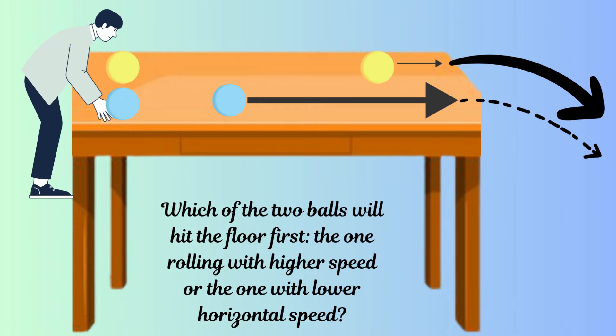Before we start analyzing projectile motion in detail, try this experiment: take two balls and place them gently on a smooth table. Roll both balls at the same time but apply different forces — a little force on the first and a much greater force on the second. Make sure neither ball collides with any object before hitting the floor. The first ball will fall a little distance from the table, and the second will fall much further, covering a lot more horizontal distance.